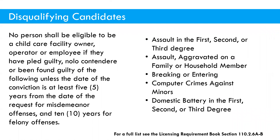Now we're going to talk about disqualifying offenses. No person should be eligible to be a child care facility owner, operator, or employee if they have pled guilty or been found guilty of any of these offenses. We look at the date of conviction — that's five years for a misdemeanor and ten years for a felony. You can find a full list of these disqualifying offenses in your minimum licensing standards in section 110. If an applicant tells you they were convicted of a felony in the last ten years, you'll have an idea of what to expect.